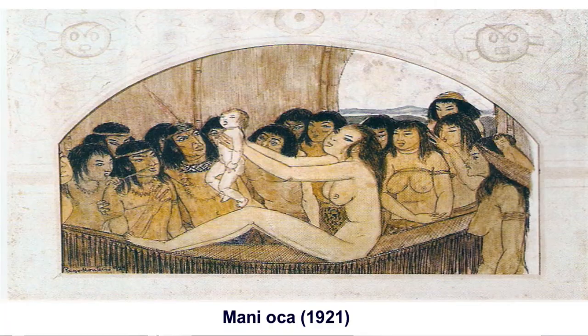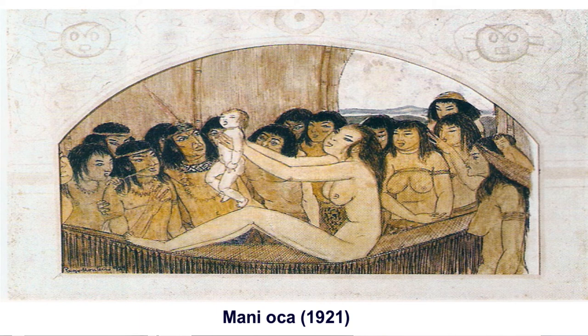Mais uma outra lenda: Manioca, que vai retratar o nascimento da macaxeira. A moça ao centro é filha do pajé. Ela diz ao pai que é virgem mas está grávida — o pai não acredita, mas à noite um espírito confirma a verdade. Nasce uma criança muito mais branca do que a média dos índios; por volta dos 4 ou 5 anos ela falece e, de onde é enterrada, surge a mandioca. É por isso que a casca é grossa e escura, mas por dentro é extremamente branca.